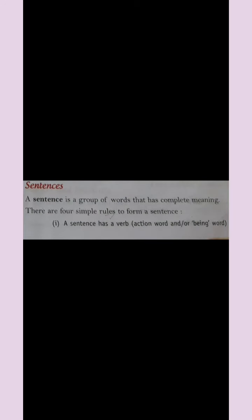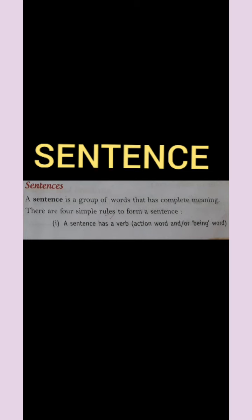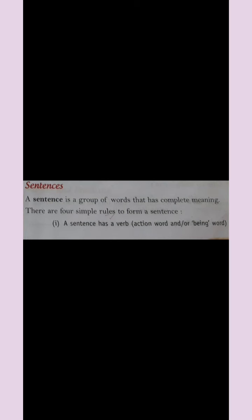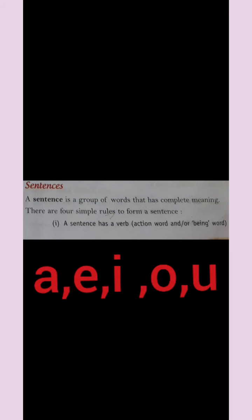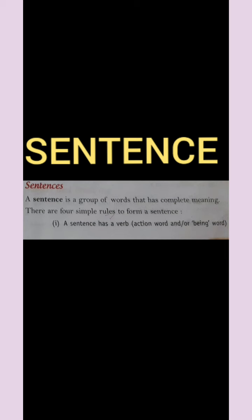Now we will learn about sentences. But first, can you tell me what we learned about the alphabet? There are 26 letters and in 26 letters there will be 5 vowels — A, E, I, O... Now children, we will learn about sentences. A sentence is a group of words that has complete meaning.